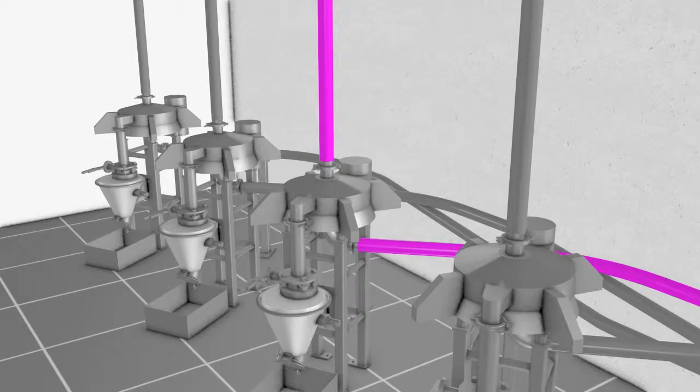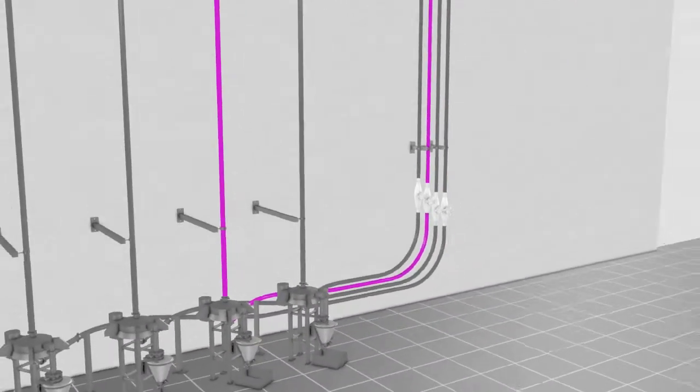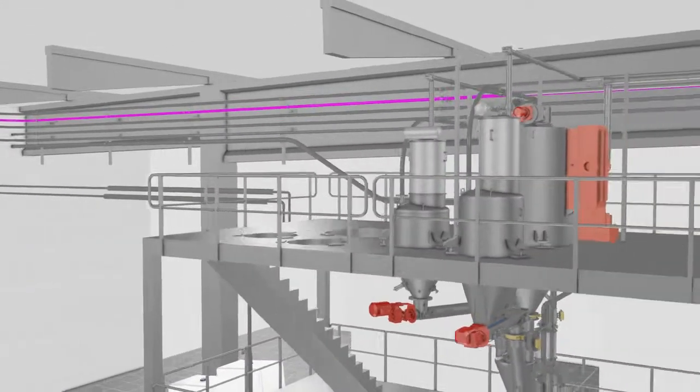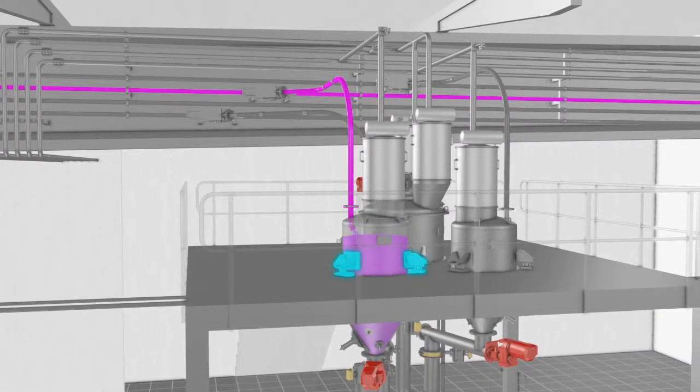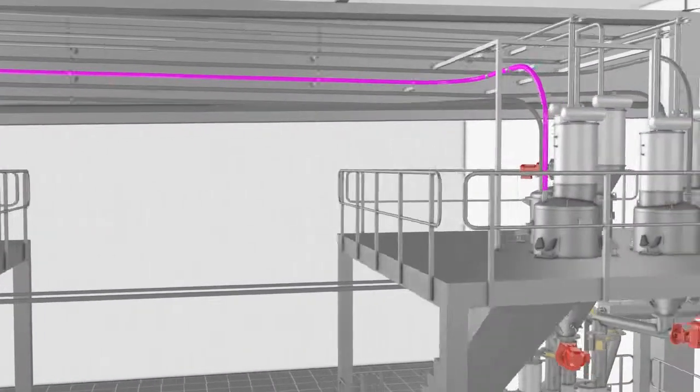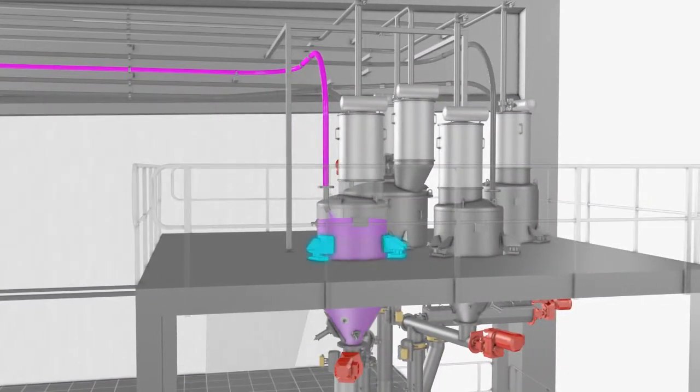Before the starch reaches the mixing platforms, an in-line vibrating sieve first removes any deviations. The starch is then divided over the mixing platforms into buffer hoppers, ready to be dosed to the mixers using loss-in-weight technology.